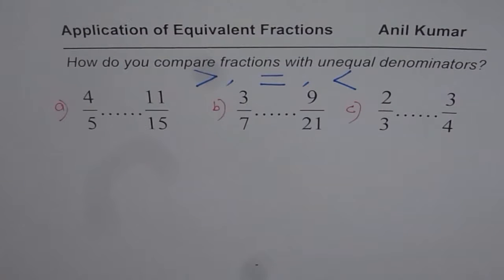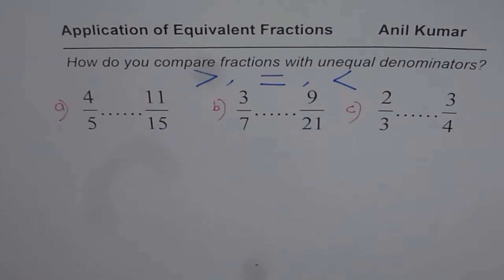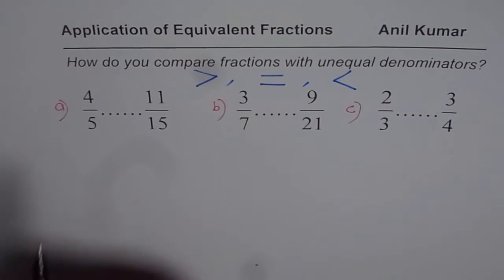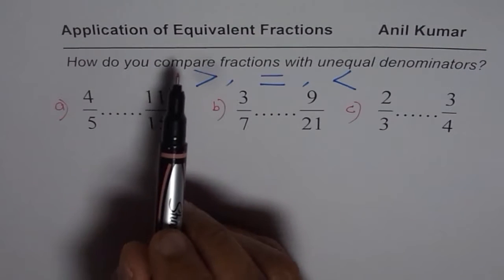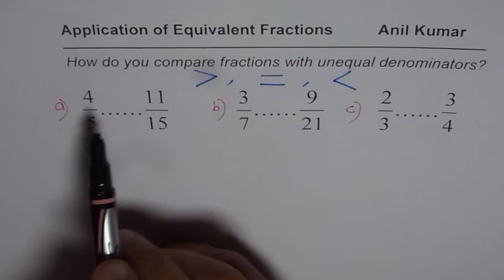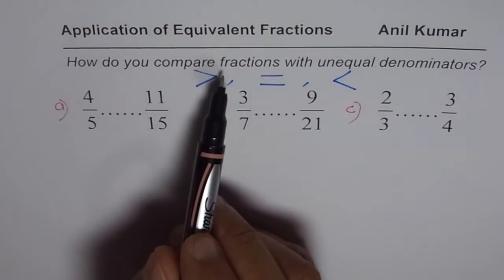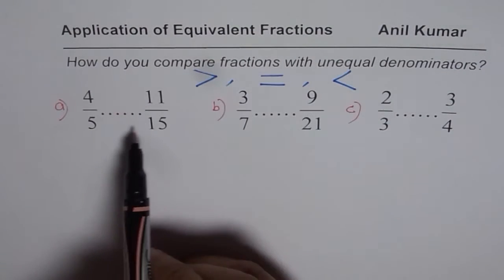The first step to compare a fraction is to look at the denominator. If the denominators are not the same, you have to make them the same. The process by which we make them the same is called writing them as equivalent fractions with the same denominator.